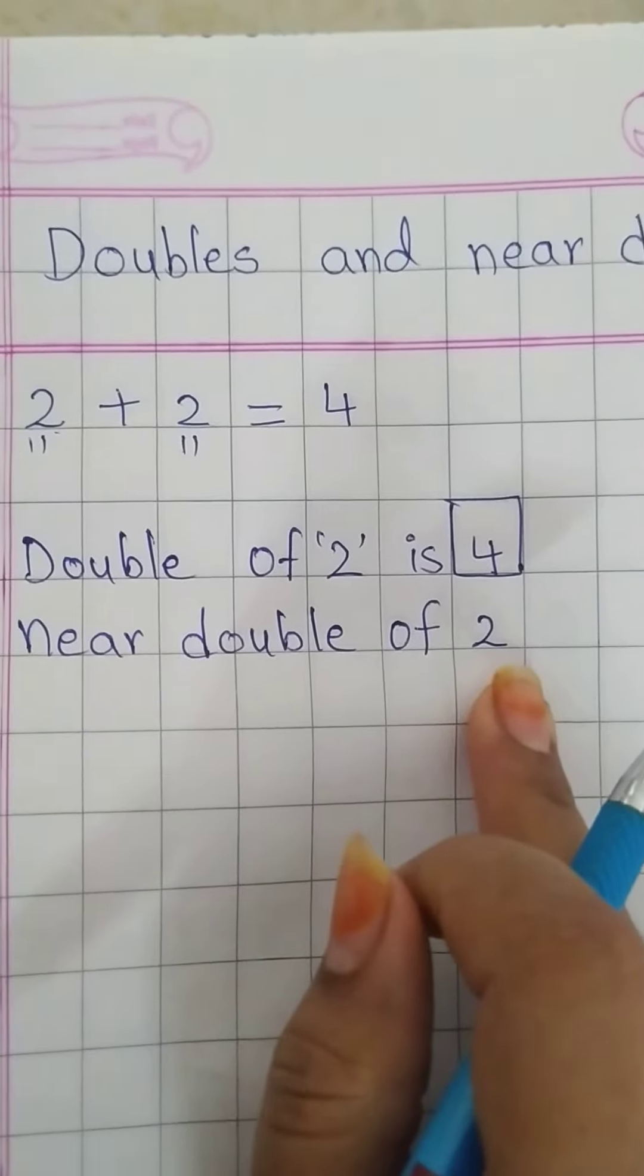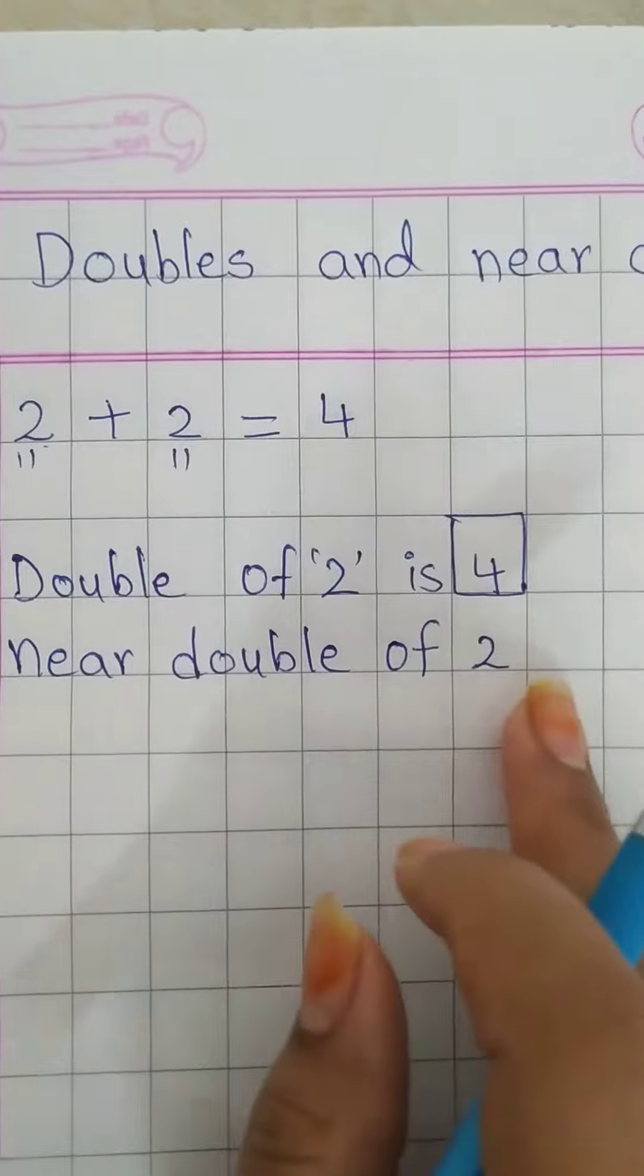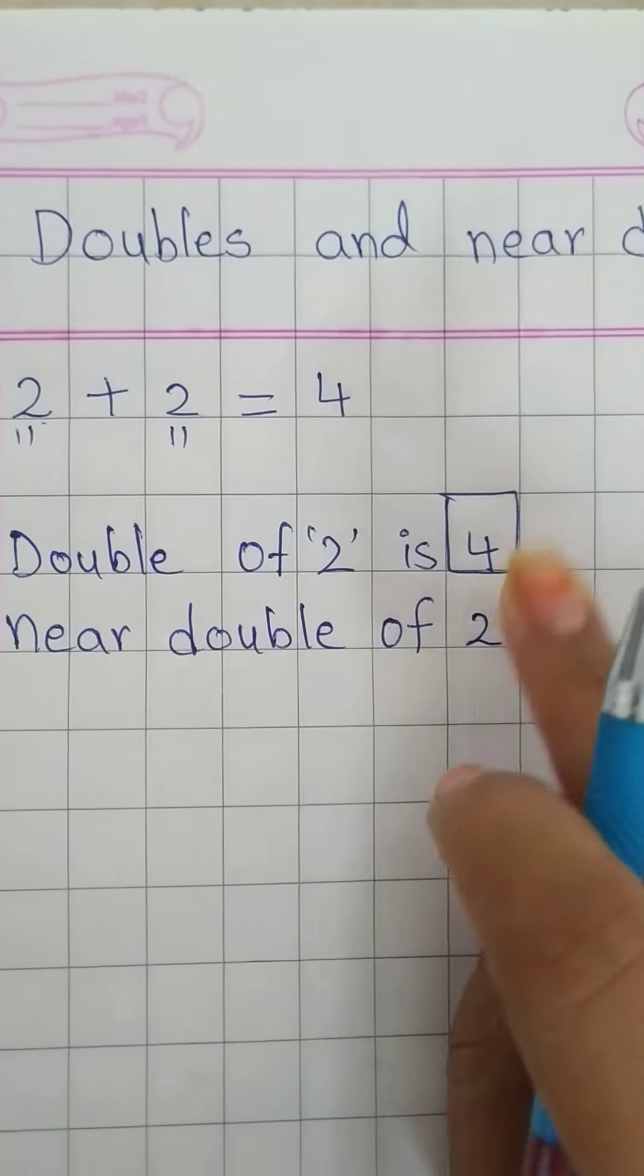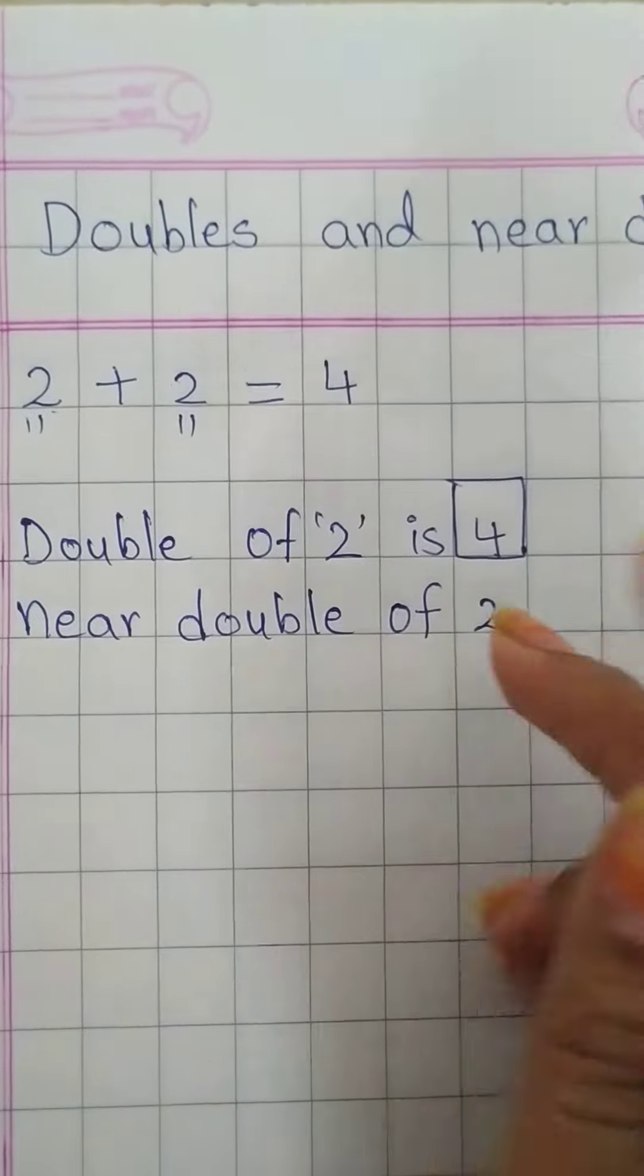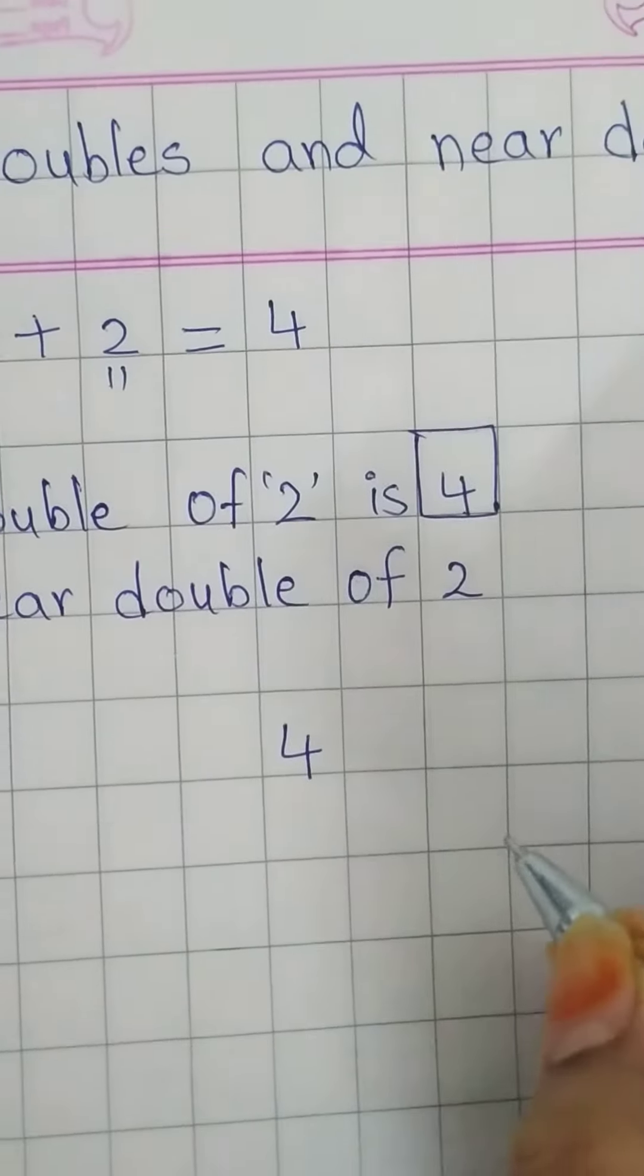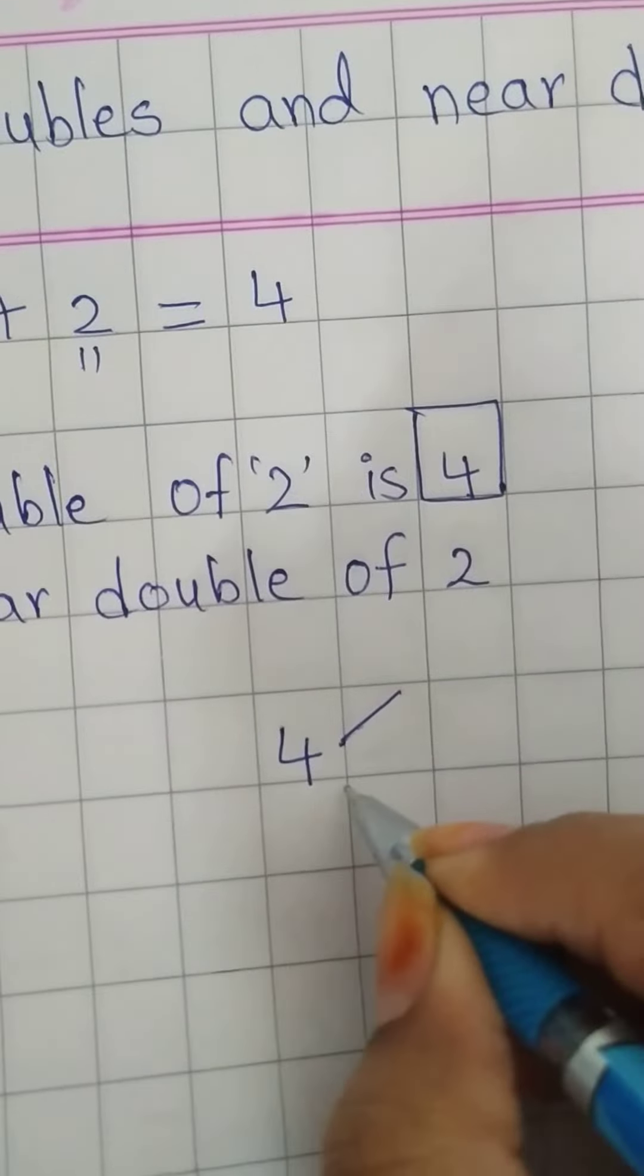Double of 2. Double of 2. What is double of 2? Answer is already here. Double of 2 is 4. So, write the number here. 4.